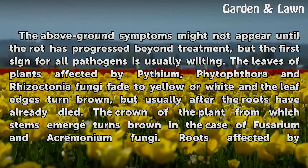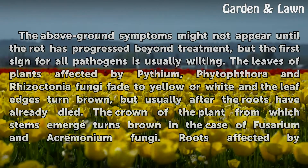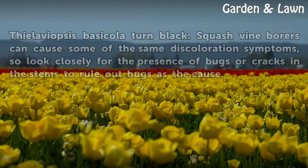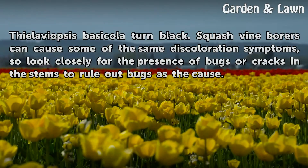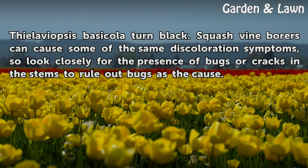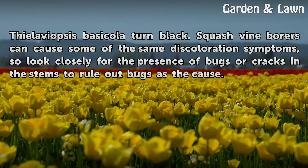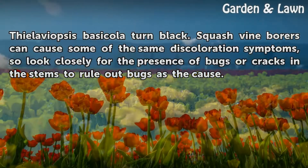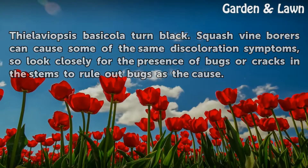The crown of the plant from which stems emerge turns brown in the case of Fusarium and Acremonium fungi. Roots affected by Thielaviopsis basicola turn black. Squash vine borers can cause some of the same discoloration symptoms, so look closely for the presence of bugs or cracks in the stems to rule out bugs as the cause.